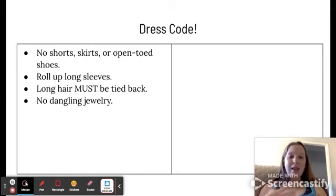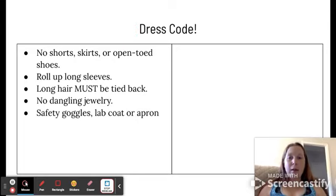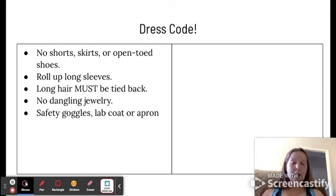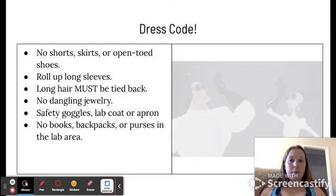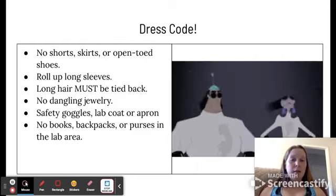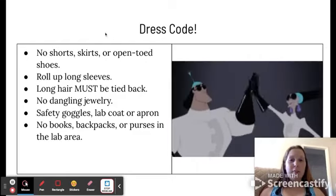No dangling jewelry, necklaces, bracelets, earrings. Just make sure you take those off before the lab. Safety goggles are a must for every lab. No questions asked. Depending on what chemicals we're using, I might have you wear an apron. Lab coats are more for higher level, so we don't really worry so much about those. And again, keep your walkways clear. Get rid of books, book bags, pocket books, things like that.